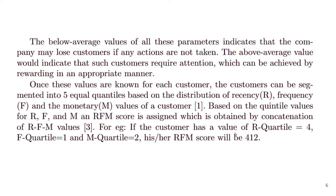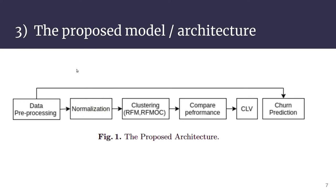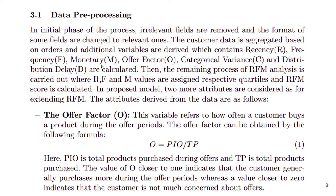The RFM score is a simple concatenation of the quartile values. For example, if the value of the F quartile is 1 for a given customer, that means the customer is a frequent buyer, whereas a value of 4 indicates the customer does not buy often. This applies similarly to the other two variables. Figure 1 shows the proposed architecture and process. The first phase is data preprocessing, where irrelevant fields are removed and data cleaning takes place. RFM values are derived for each customer, along with the additional variables used in this study.